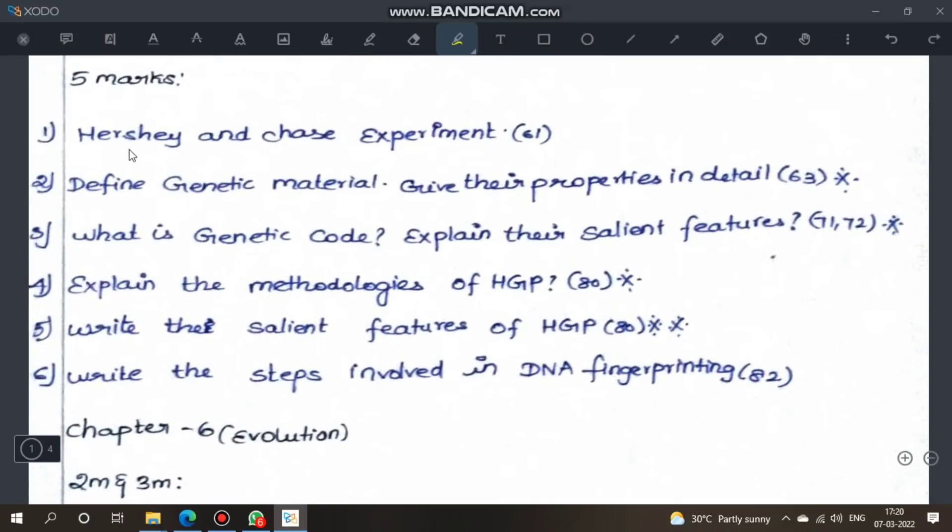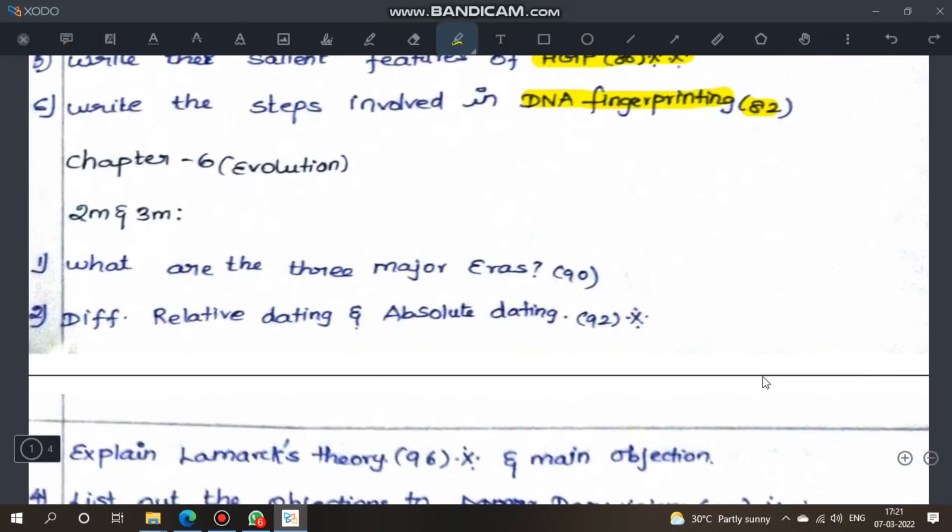Next, five marks: Hershey and Chase experiment, page 61. Define genetic material and give their properties in detail. Properties of genetic material question. Sometimes definition, sometimes write down the properties. Page 63, very important. Next, what is genetic code? Explain the salient features. Very important, pages 71-72. Next, explain the methodologies of human genome project, page 80. Write the salient features of human genome project, page 80, very important. Next, write down the steps involved in DNA fingerprinting, flowchart, page 82. This is about molecular genetics.